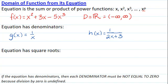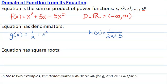If the equation has denominators, then each denominator must be not equal to 0, because division by 0 is undefined. In these two examples, the denominator x must be not equal to 0 for g, and the denominator 2x plus 3 must be not equal to 0 for h.